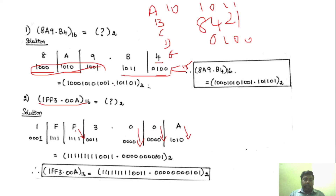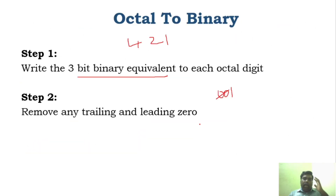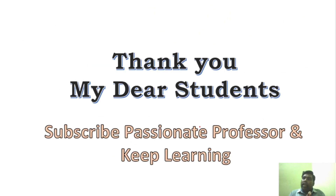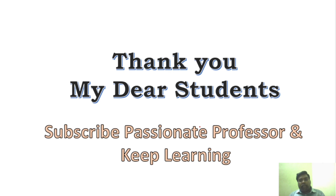For 15, everything is 1 — so it is 1111. For 3, it is 0011. Then you write the integer part, dot, then the fractional part. The steps are very simple for both octal to binary and hexadecimal to binary. All you have to do is write the equivalent binary value: use the 421 code for octal and the 8421 code for hexadecimal, then combine the integer and fractional parts. Hope you understand the logic behind this. Thank you, students.